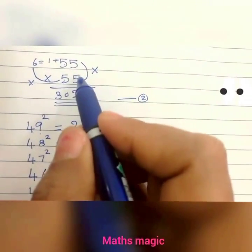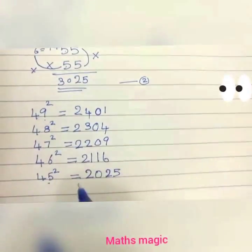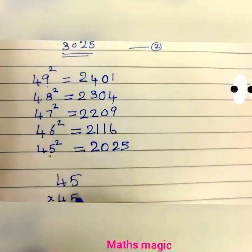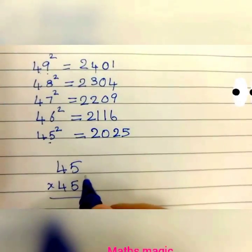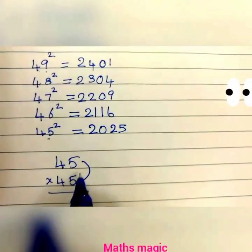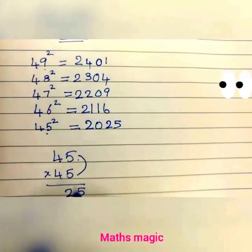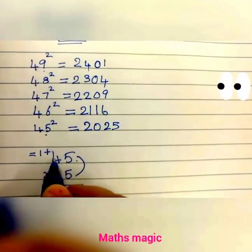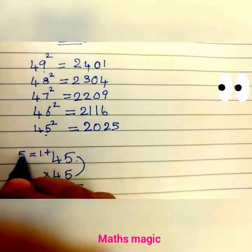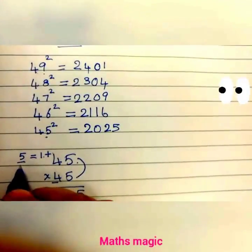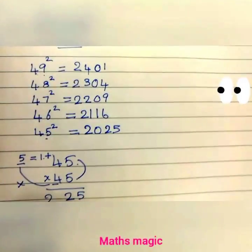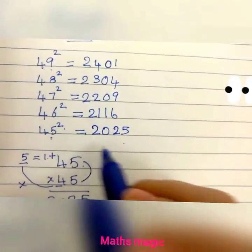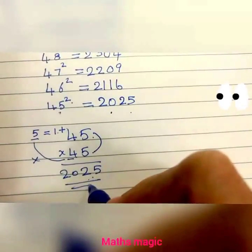We can also find 45 squared in another method. 45 multiplied by 45: 5 times 5 is 25. Then add 1 to 4 to get 5, and multiply 5 and 4: 5 times 4 is 20. So 45 squared is 2025. All two-digit numbers ending in 5 can be done in this method as well.